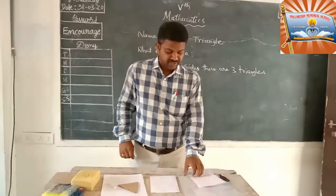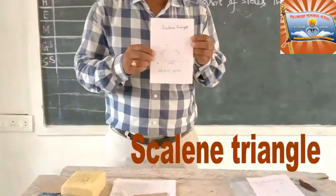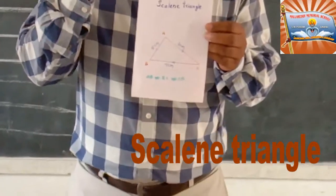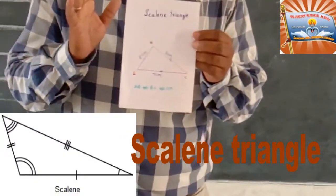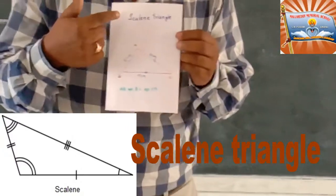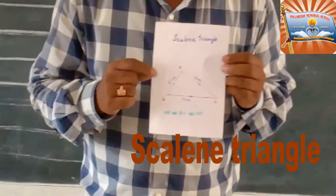The first triangle is scalene triangle. The triangle with no sides are equal. Again, I am repeating, the triangle with no sides are equal is called scalene triangle.